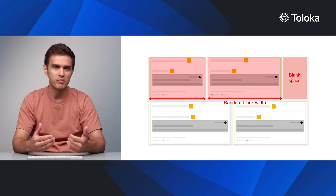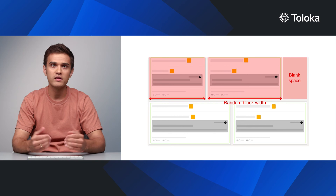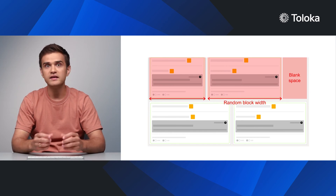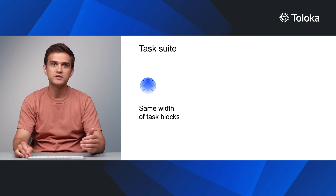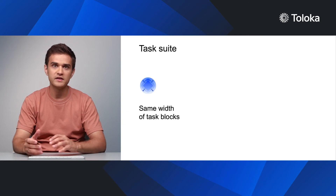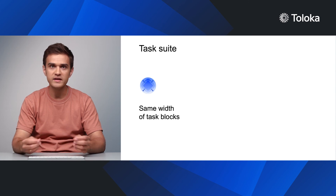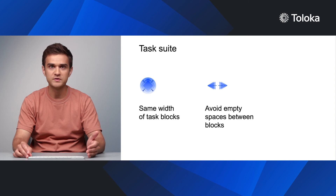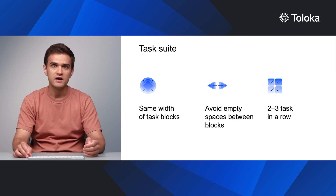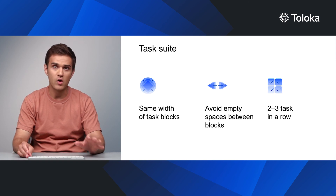How should you arrange tasks on a page? A task page should be an easy-to-use interface. Keeping too much information on the screen is exhausting, while unevenly spaced content is confusing. One page should contain several separate tasks — this is convenient when the tasks are simple enough. We recommend making individual tasks with the same width and avoiding large gaps between them. When grouping tasks, don't put more than three tasks in one row. If possible, keep one task in one row.